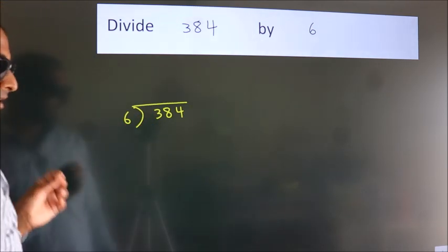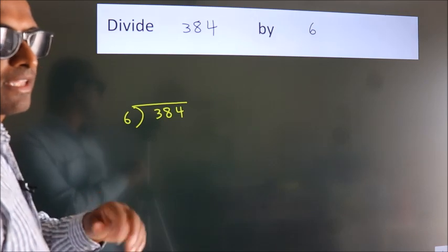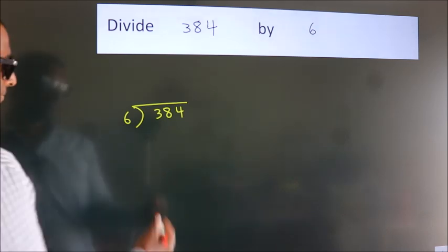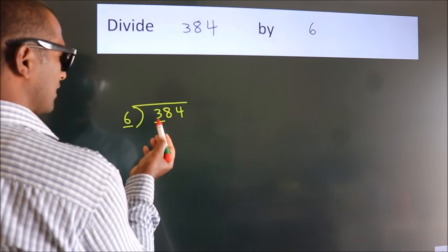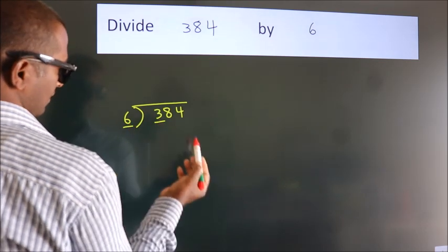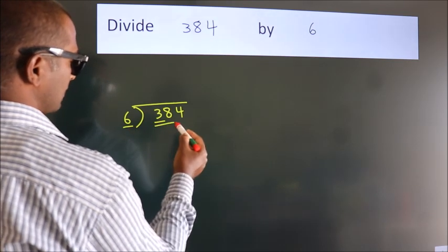This is your step 1. Next, here we have 3, here 6. 3 smaller than 6. So we should take 2 numbers, 38.